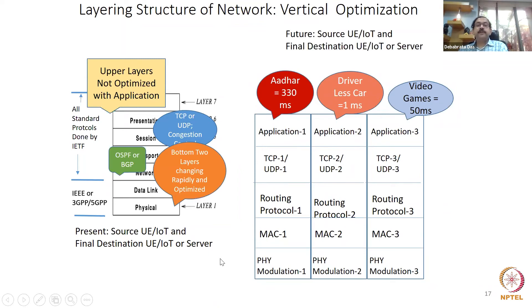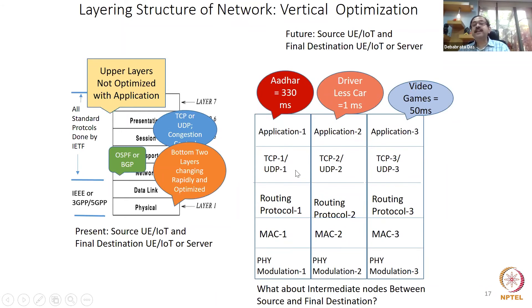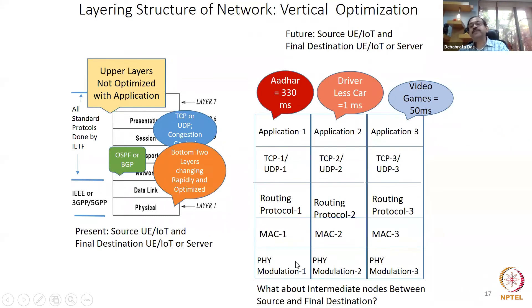What about intermediate nodes between source and destination? All intermediate nodes — routers, switches — have only the bottom three layers (not the top application and transport layers). So for an Aadhaar session, Protocol Set 1 (Routing1, MAC1, Physical1) gets activated in the intermediate routers. For driverless cars, Protocol Set 2 gets activated. The intermediate nodes know what kind of application is coming and tune themselves — the appropriate slice gets activated for your session.